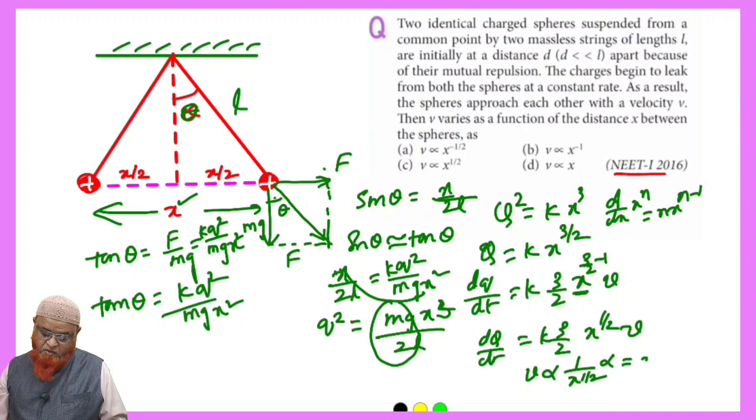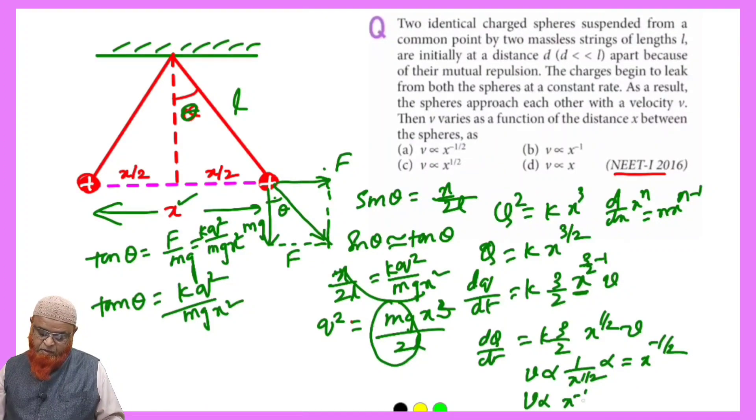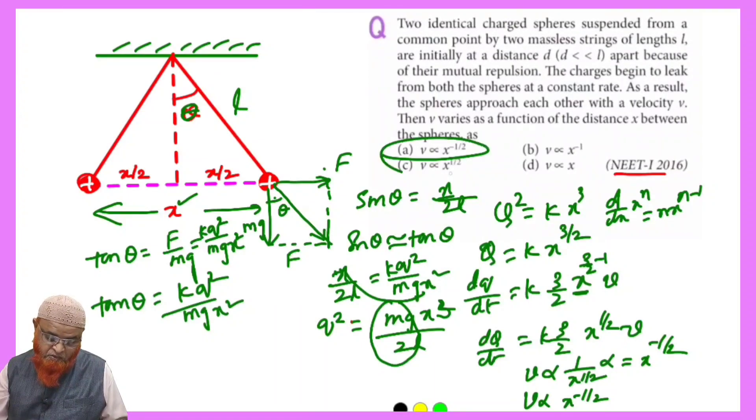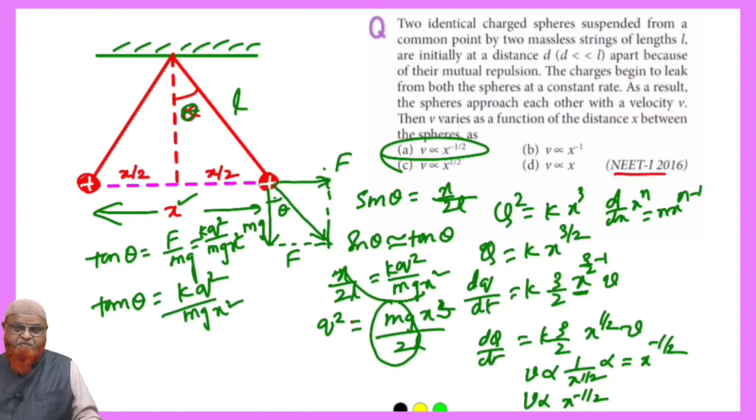And which is equal to, we can write this as x^(-1/2). Therefore v is directly proportional to x^(-1/2). That's it, so this is going to be the correct option, that is option A. Hope you have understood this one, thank you very much.